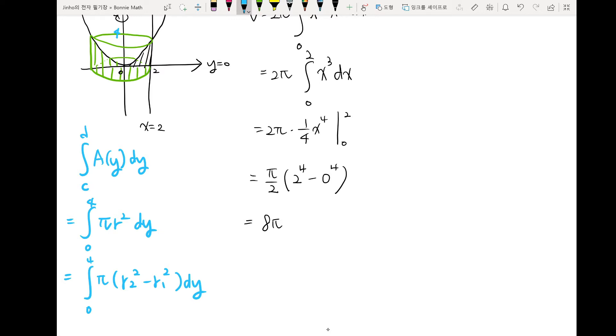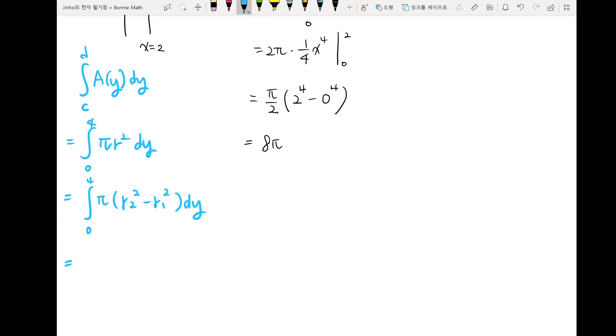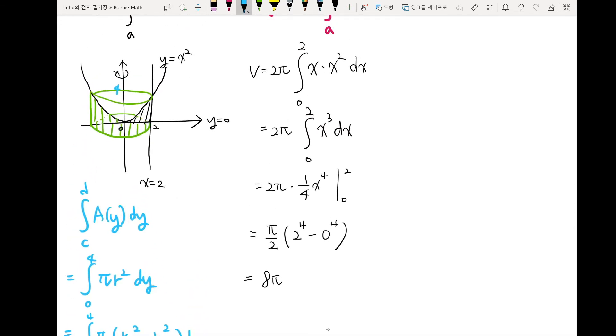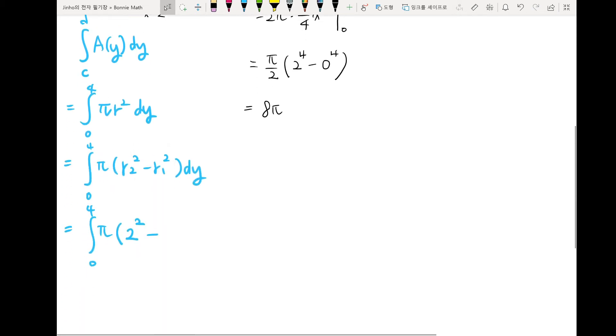So r2 square, which is the bigger part or outer circle, is following x equal to 2. So integral 0 to 4, π r2, which is x equal to 2, so 2 square minus r1, which is inner circle, is following this y equal to x square, but we are making the equation with respect to x. So we will rewrite this one, x equal to root of y. So here we can write root of y square dy.